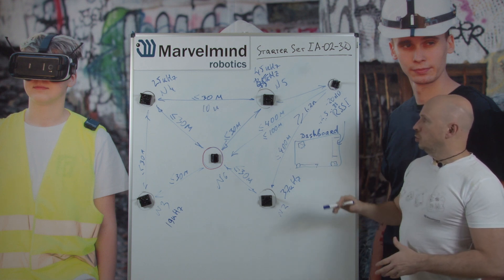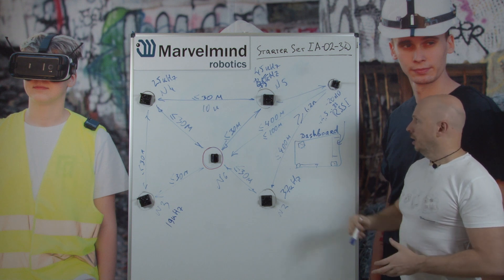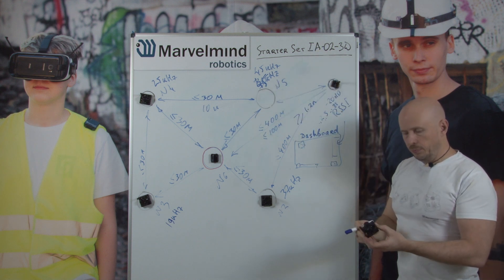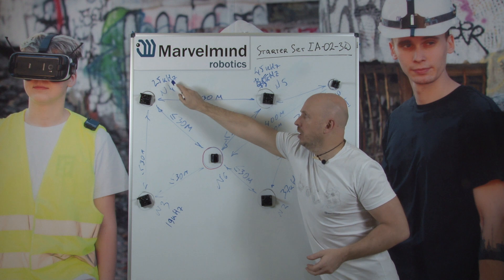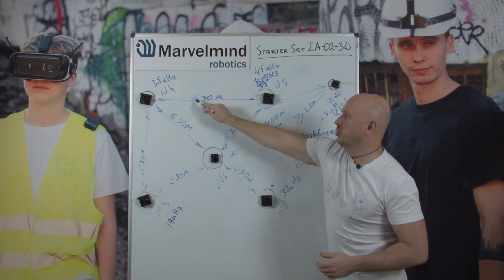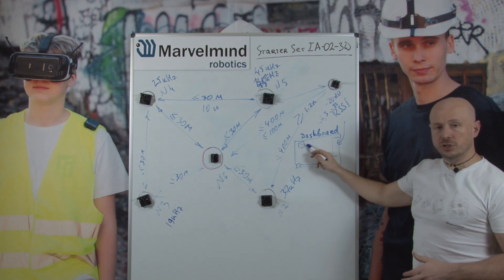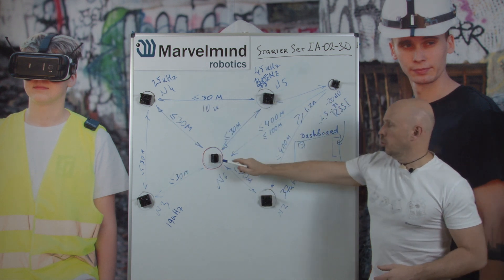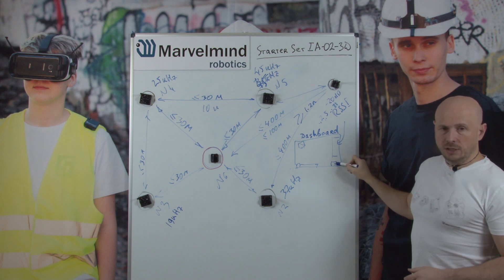Once you have these basics covered, you can place the beacons in your room, office, or warehouse — wherever you are testing. Since inverse architecture ER02 uses beacons with hardware version 4.9, they are not able to communicate with each other because they use different ultrasonic frequencies. This means you must measure the distances between them manually and enter those distances into the distance table for all stationary beacons. Your mobile beacon must be activated as well. Once all distances are entered, press the Freeze button.